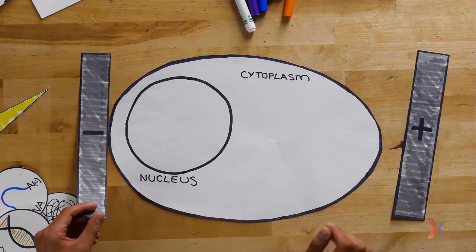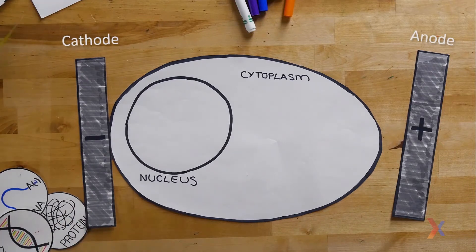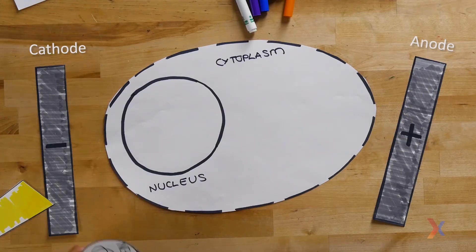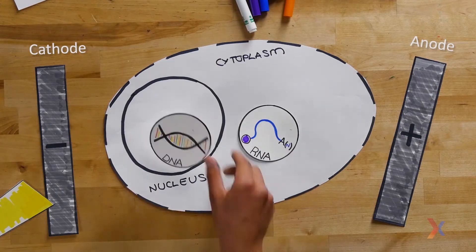During this procedure, a voltage is applied and an electrical current passes through the cells. This leads to the formation of holes in the cell membrane through which nucleic acids or protein are able to enter the cell.